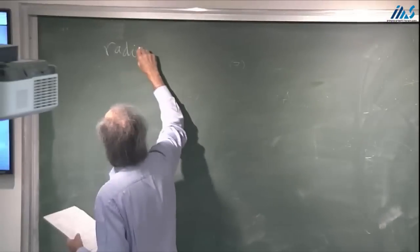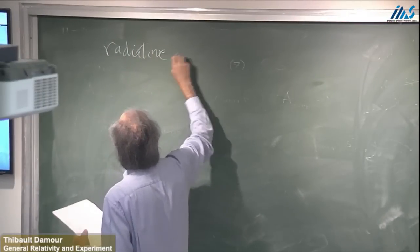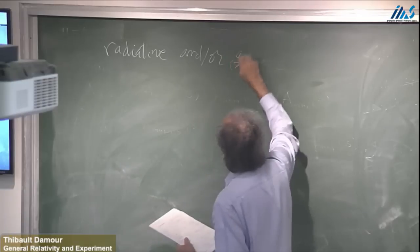Last time, we discussed tests of generativity in the quasi-stationary weak-field regime of the solar system, where the deviation H_mu_nu from G_mu_nu all over the solar system were smaller than 10^-6 around the sun and 10^-8 around the Earth, and were slowly varying. So this was the quasi-stationary weak-field regime. I want to discuss now a test of the dynamics of gravity in the radiative and/or strong-field regime.